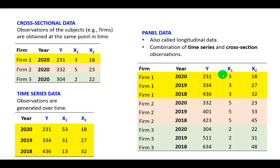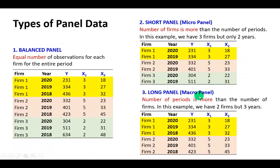Panel data — also called longitudinal data — is a combination of time series and cross-section observations, and this is what we're going to talk about in this series. It's important to be mindful of the correct panel data structure. Notice that each firm's chronological data are completely listed before moving on to the next, so firm 1's data are listed chronologically from 2018 to 2020, and we do exactly the same for firms 2 and 3.